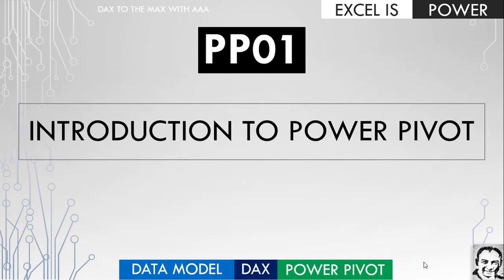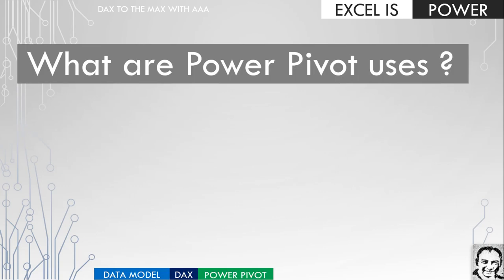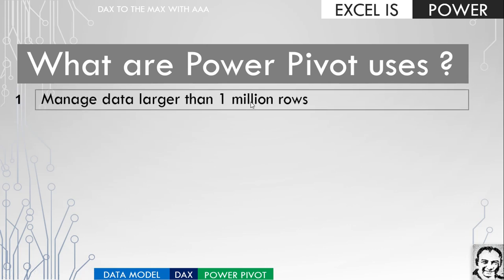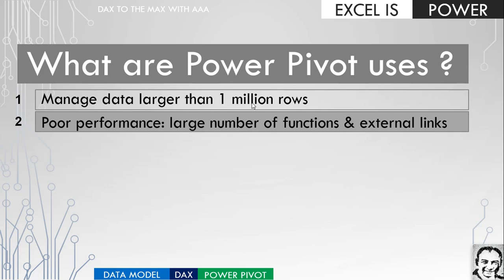Now let's discuss the second topic: what are Power Pivot uses? There are many, but here are seven. First, if you need to manage data larger than one million rows — Excel's limit — Power Pivot handles it with no issue, whether it's 10 million or 20 million rows. Second, poor Excel performance: even without exceeding the row limit, working with large numbers of functions and external links makes Excel very slow, and Power Pivot can solve this.